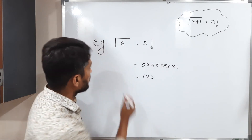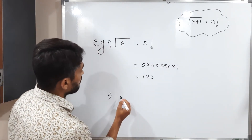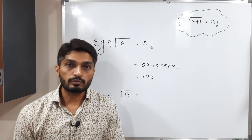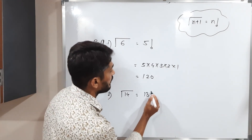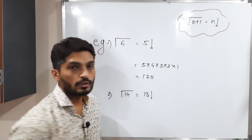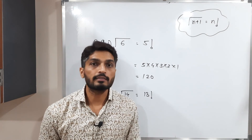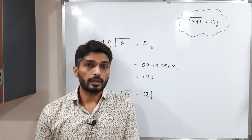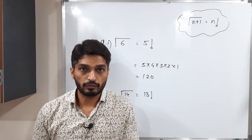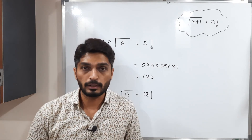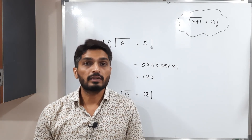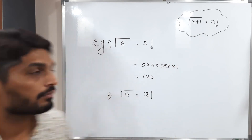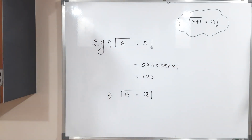Let us do one more example. If we want to find γ(14), its value is 13! by the same result. You can easily find the value of 13! using a calculator. In this way, for any natural number n, we can find γ(n) easily using this result. Make a screenshot of it.